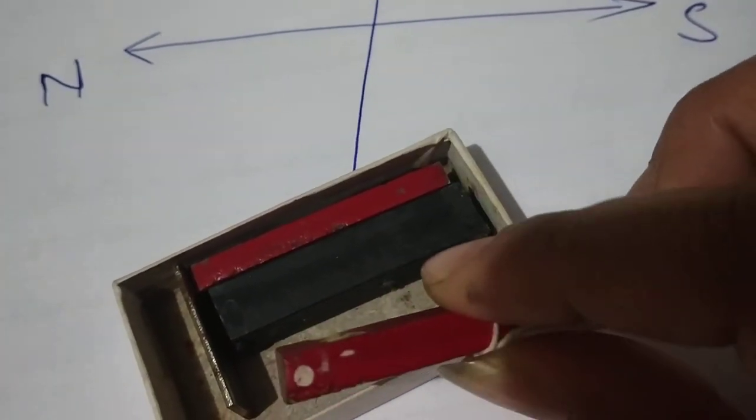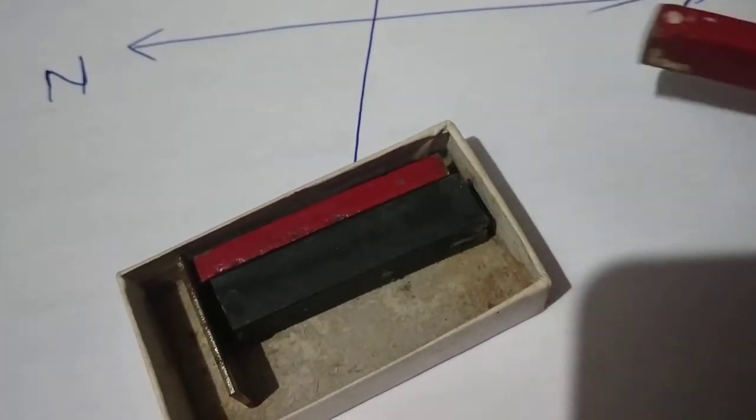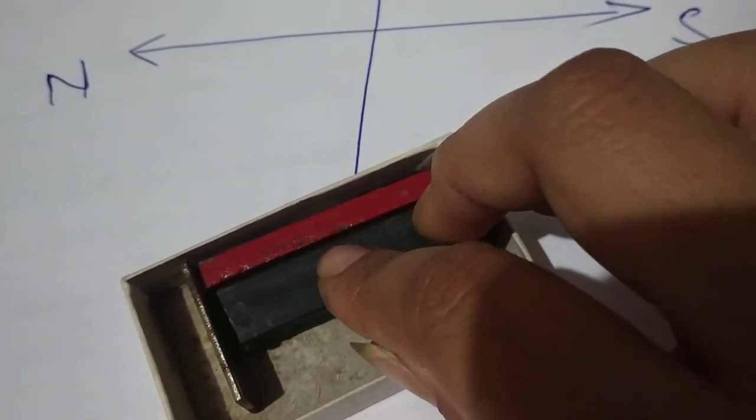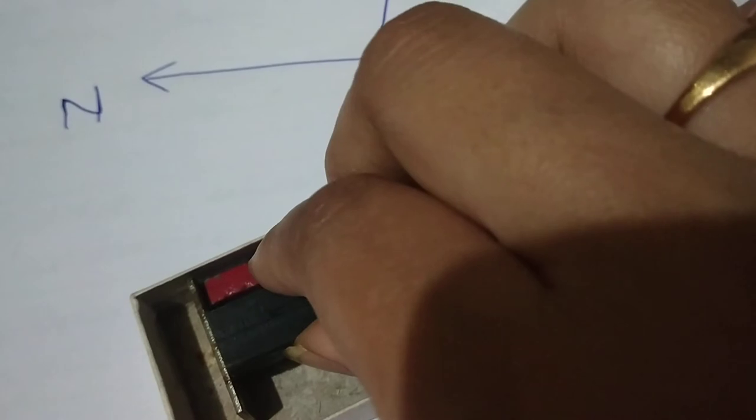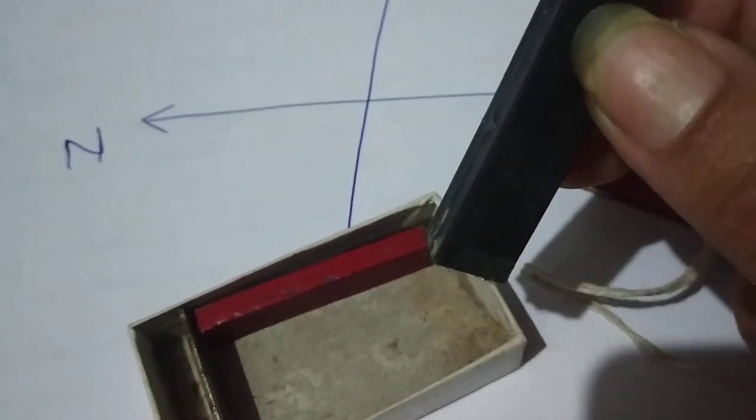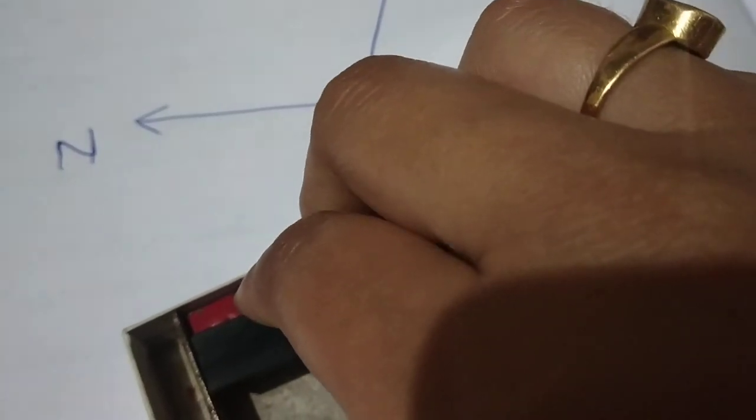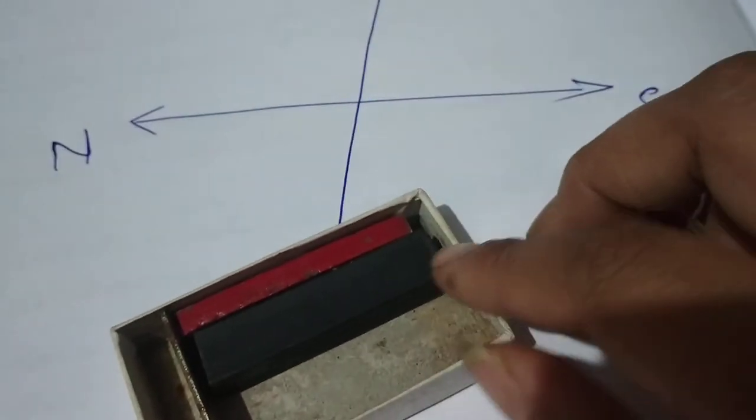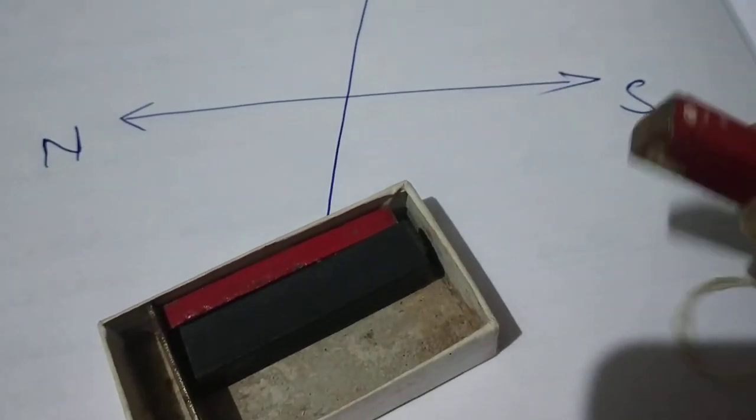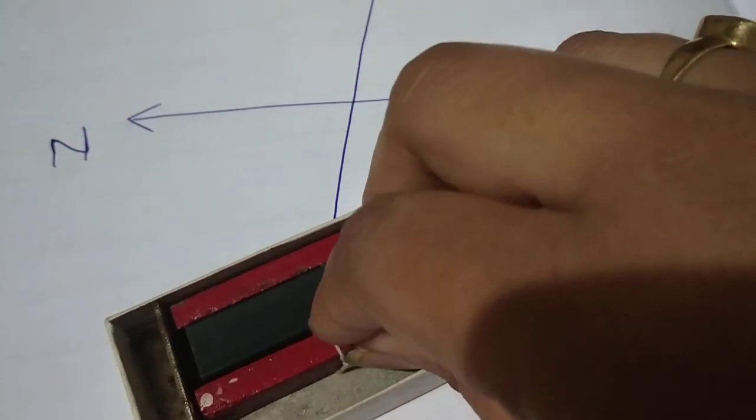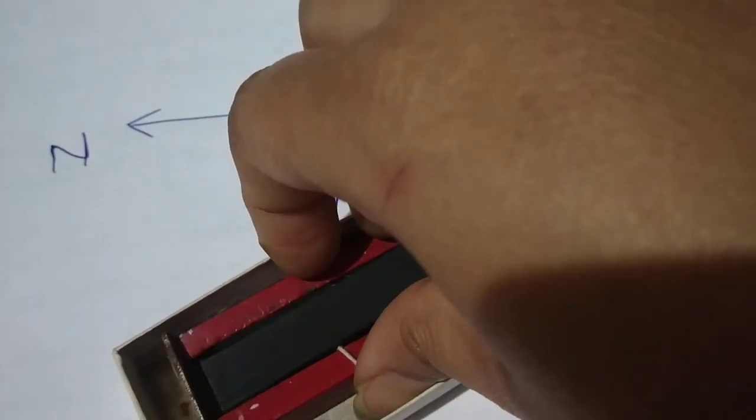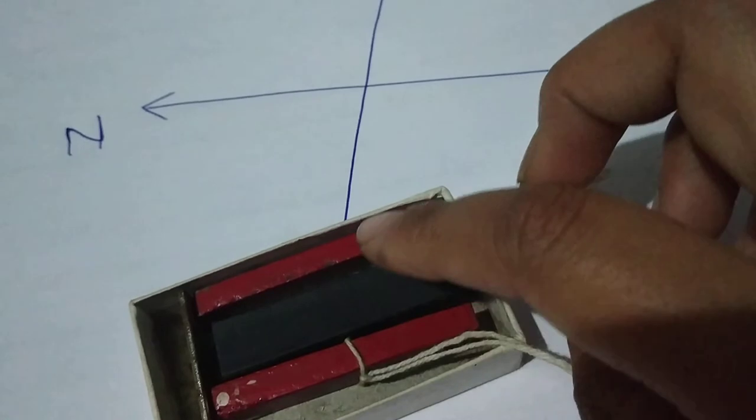When two magnets are placed together, you have to be sure to keep a distance between them. Here the distance is maintained by this cubical plastic block.